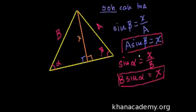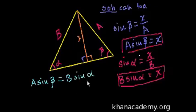Let me write that down in a soothing color. So we know that A sine of beta is equal to X, which is also equal to B sine of alpha. If we divide both sides of this equation by A, what do we get?